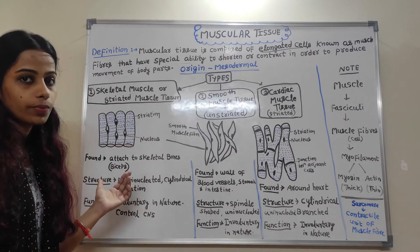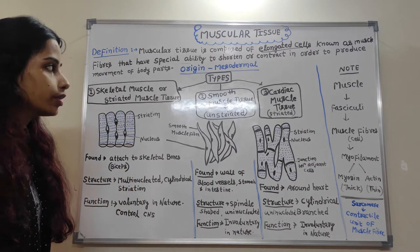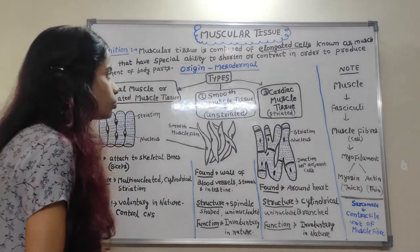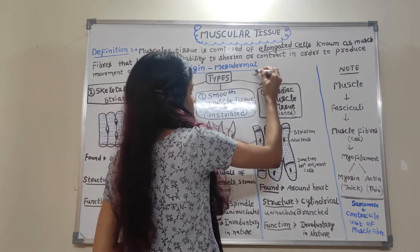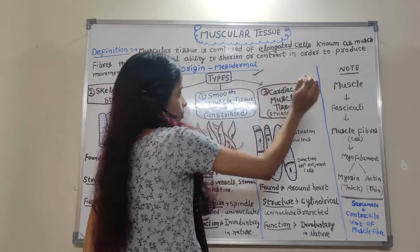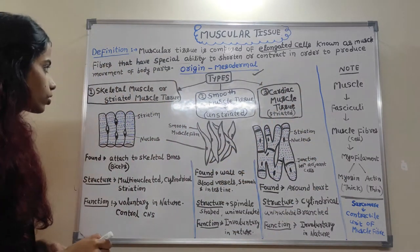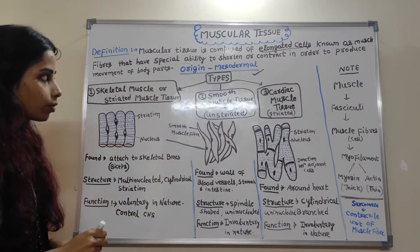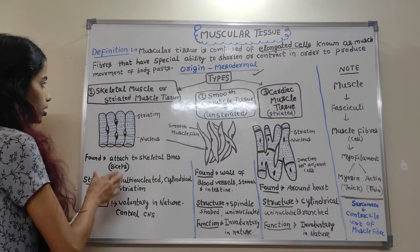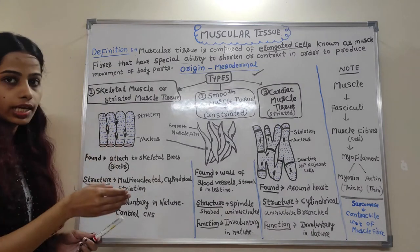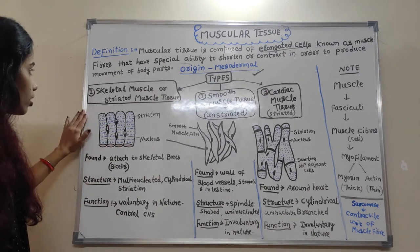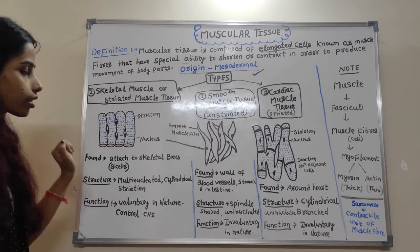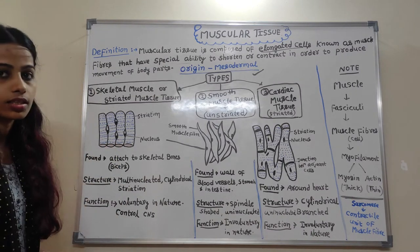The origin of muscular tissue is mesodermal. Now let's talk about the muscular tissue types with their structure. The first one is skeletal muscle.